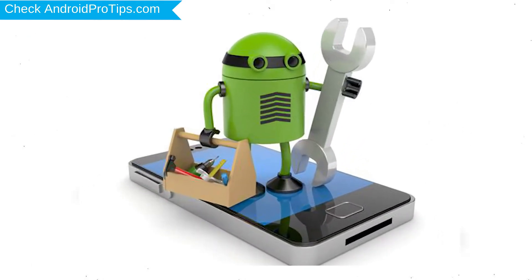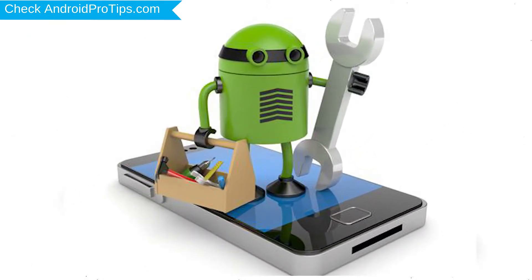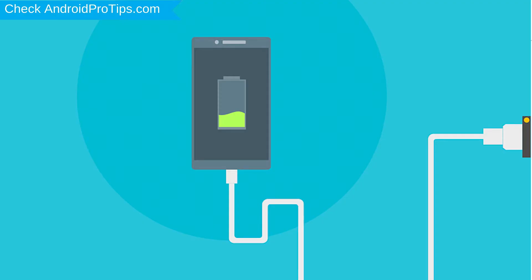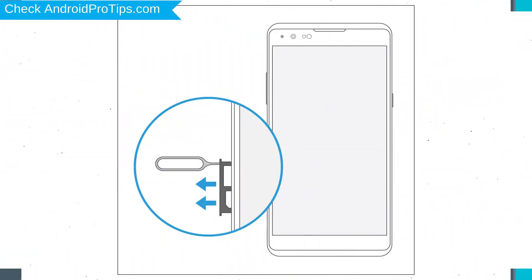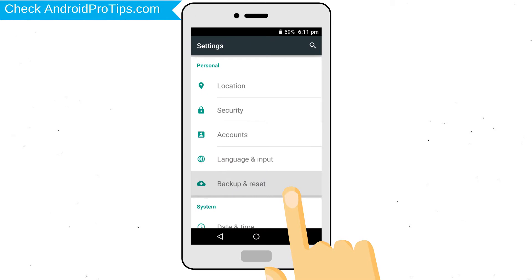Before resetting your mobile, your mobile battery must be above 50%. Remove SD cards and SIMs. Back up your Android mobile data if possible.